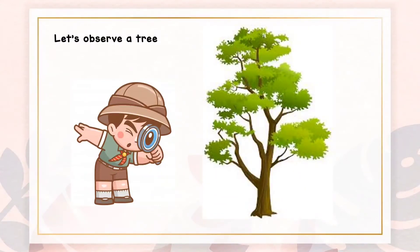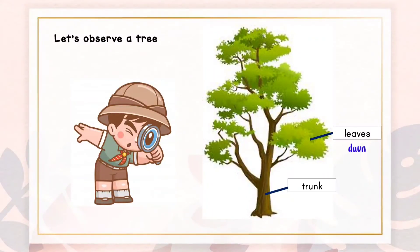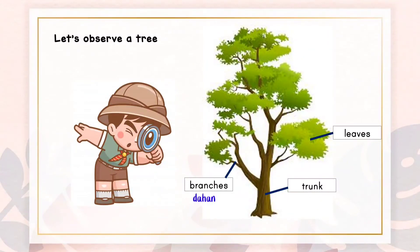Now let's observe a tree. The leaves are green. It has a big trunk. It has many branches. And roots.